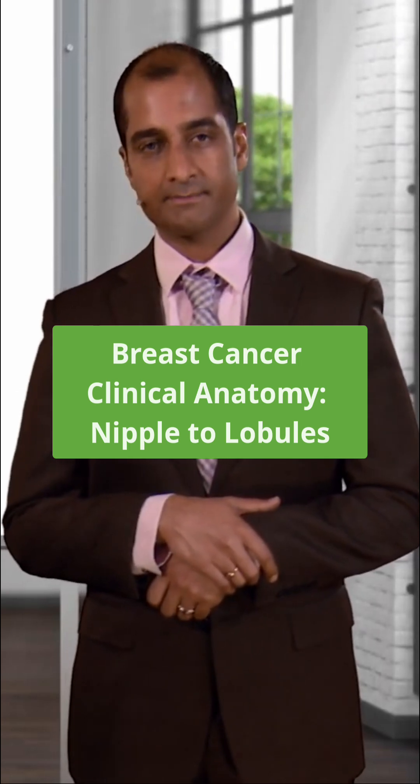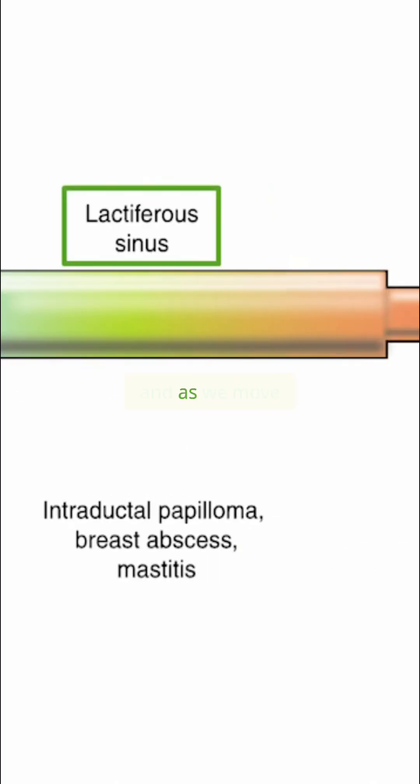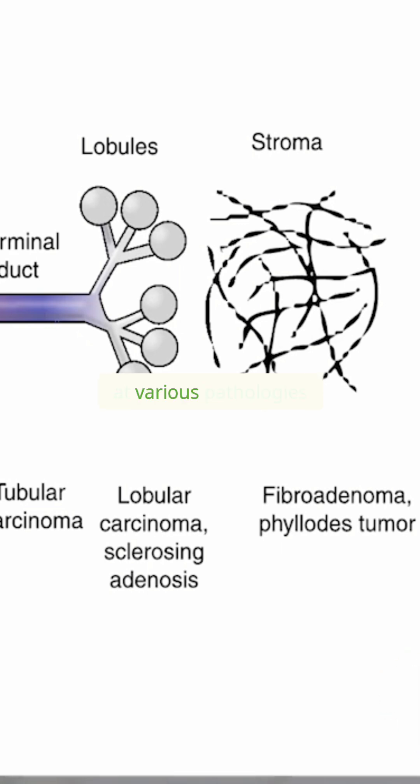We'll walk you through the clinical anatomy of breast cancer. On the left is your nipple, and as you move from the nipple all the way down to the stroma, we'll take a look at various pathologies underneath.